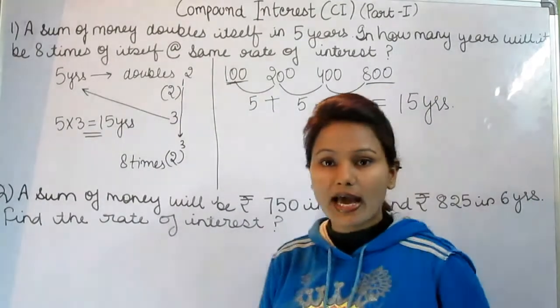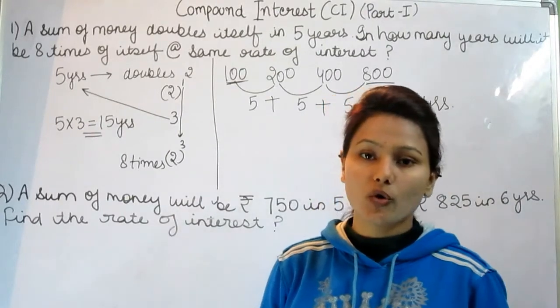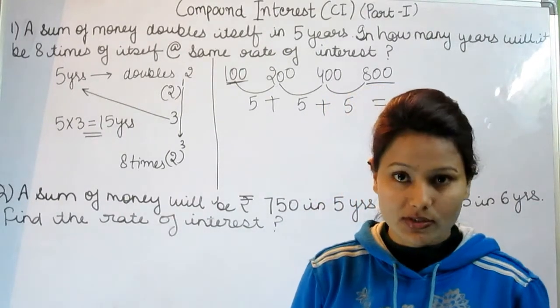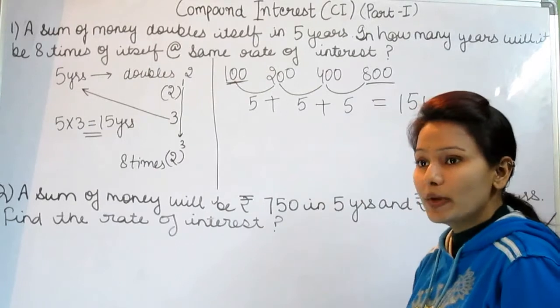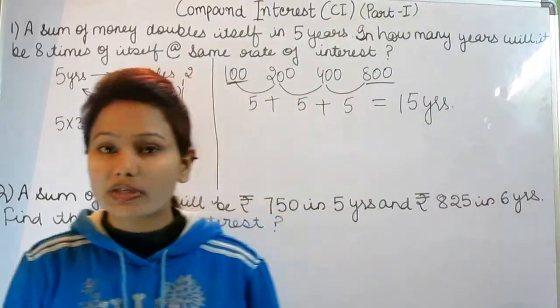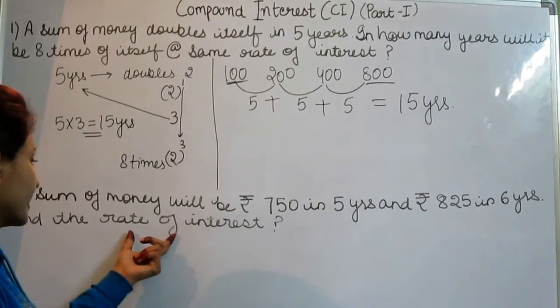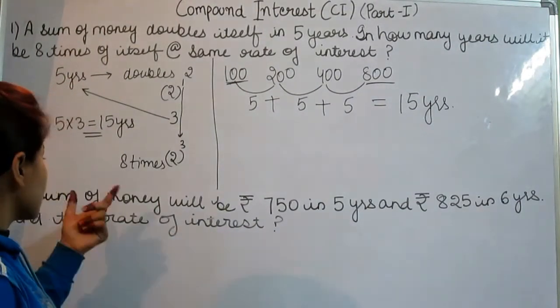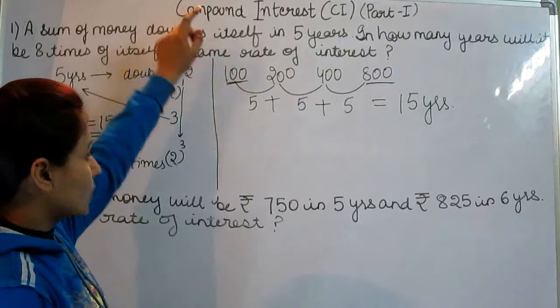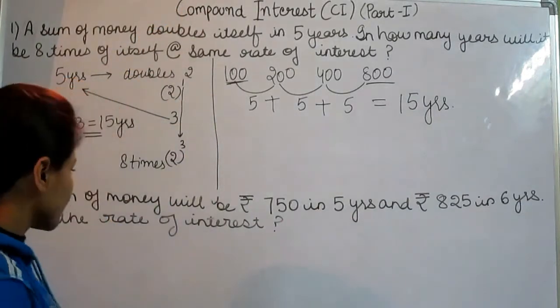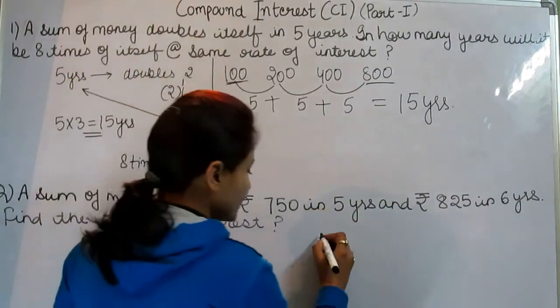But in simple interest we have to get the principal before solving before getting rate of interest, because simple interest is always calculated on principal. But we don't have to get the principal before getting the rate of interest, because compound interest is always calculated on amount.